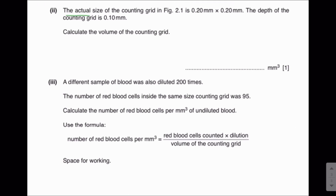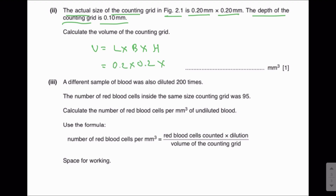The actual size of the counting grid is 0.20 mm by 0.20 mm, and the depth of the counting grid is 0.1 mm. We need to calculate the volume of the counting grid. Using volume = length × breadth × height: 0.2 × 0.2 × 0.1 = 0.004 mm³. So the volume of the counting grid is 0.004 mm³.